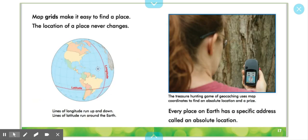Map grids make it easy to find a place. The location of a place never changes. Lines of longitude run up and down. Lines of latitude run around the Earth.